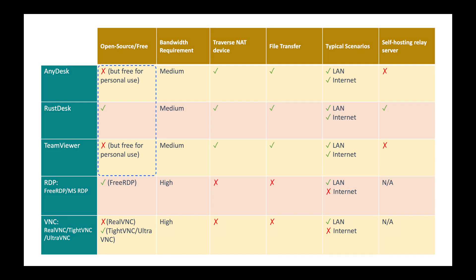TeamViewer and AnyDesk are well-known commercial software. RustDesk is open source and free. RDP and VNC are traditional tools for LAN networks, and RDP and VNC need more bandwidth than the others.